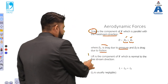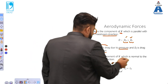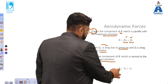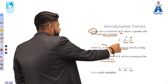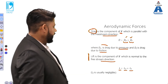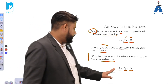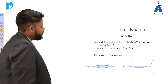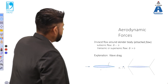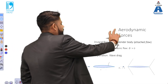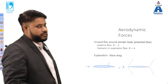Lift is the component normal to the free stream direction. It is expressed as L = L_P + L_F, where L_P is related to pressure and L_F is related to friction. L_F is usually negligible.